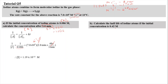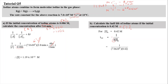For part B, calculate the half-life of iodine atoms if the initial concentration is 0.42 molar. The half-life formula for a second-order reaction is T½ equals 1 over (K times I0). Substituting K and I0 equals 0.42, we get T½ equal to 3.4 times 10 to the power of negative 10 seconds.